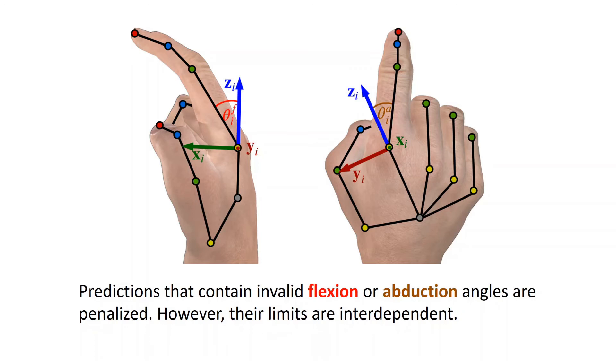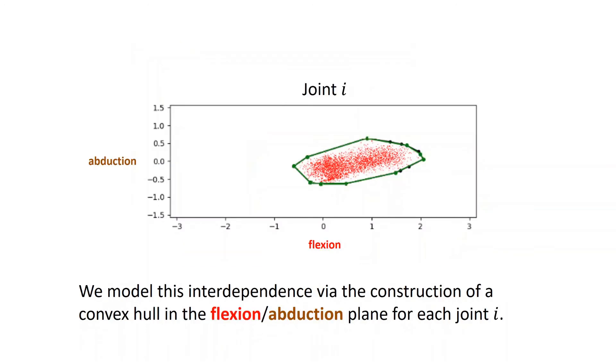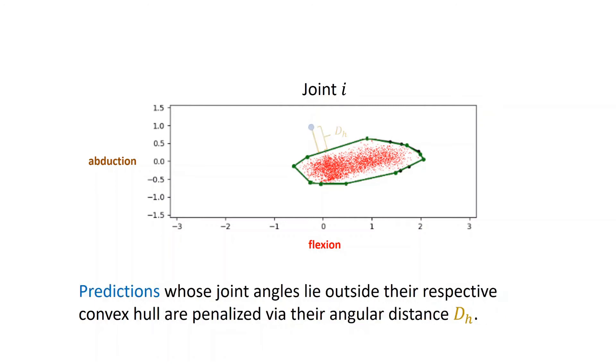However, their limits are interdependent. We model this interdependence via the construction of a convex hull in the flexion abduction plane for each joint. Predictions whose joint angles lie outside the respective convex hull are penalized via the angular distance dh.